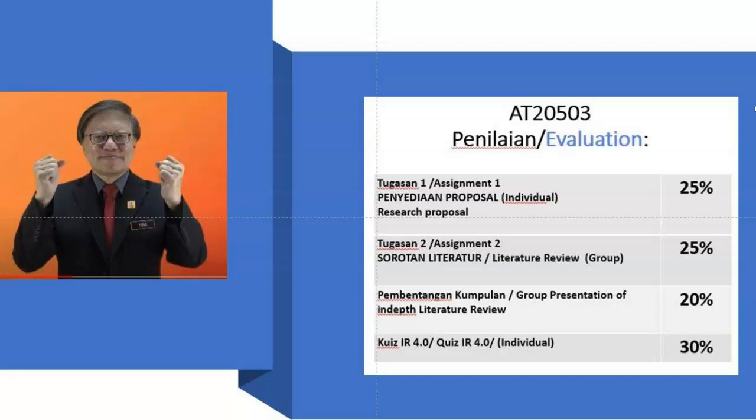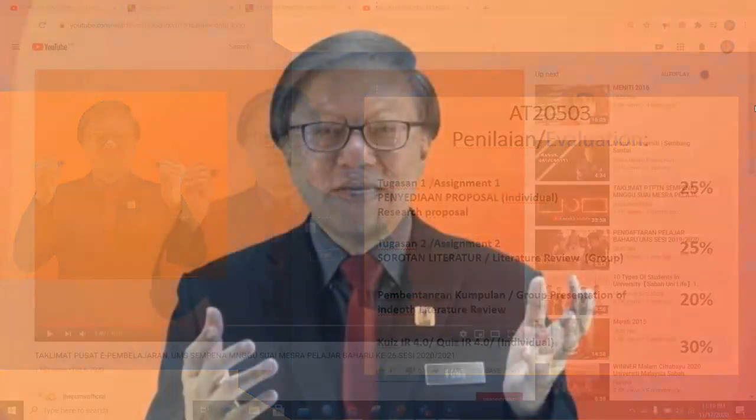Next, in groups of five per group, you will collaborate to prepare an in-depth literature review on one particular title. The group members will need to prepare a recorded presentation of your literature review that will be eventually shared in SMART UMS V3.